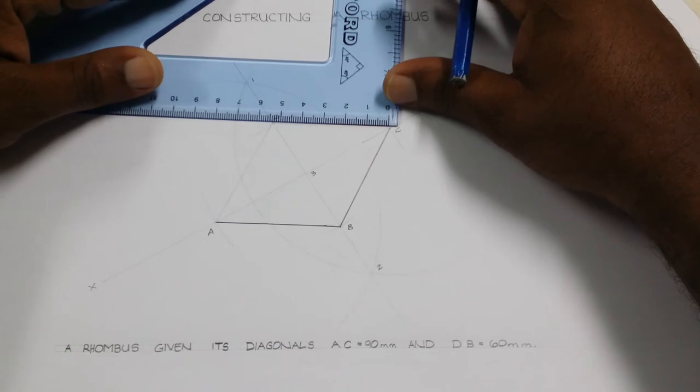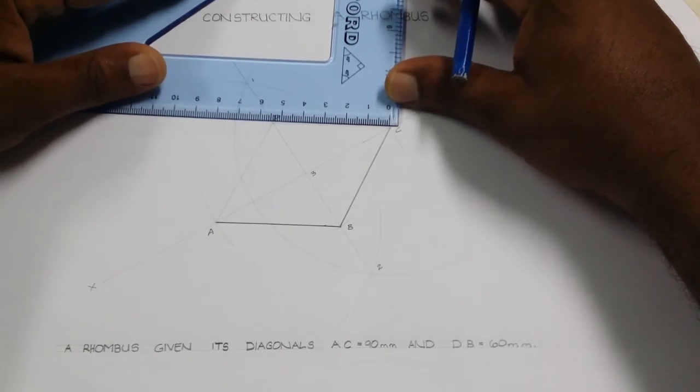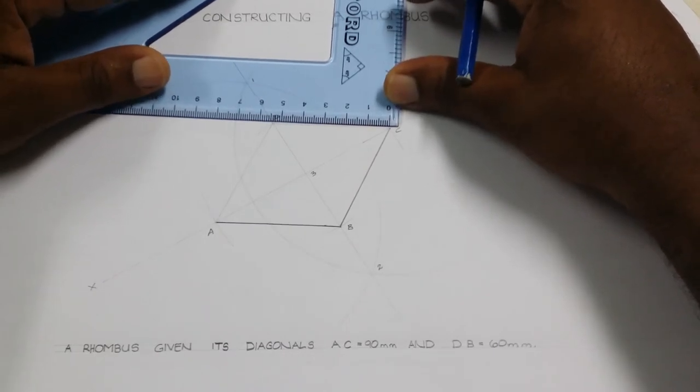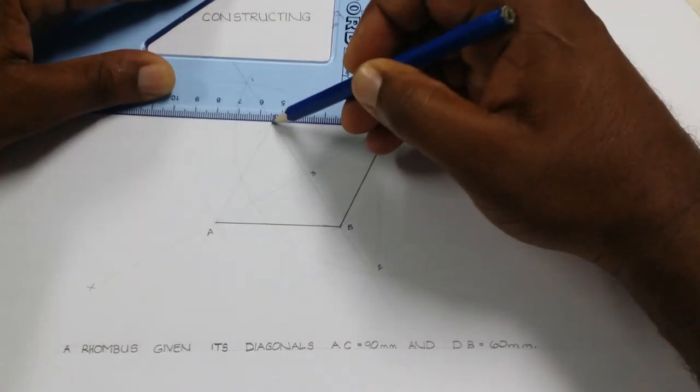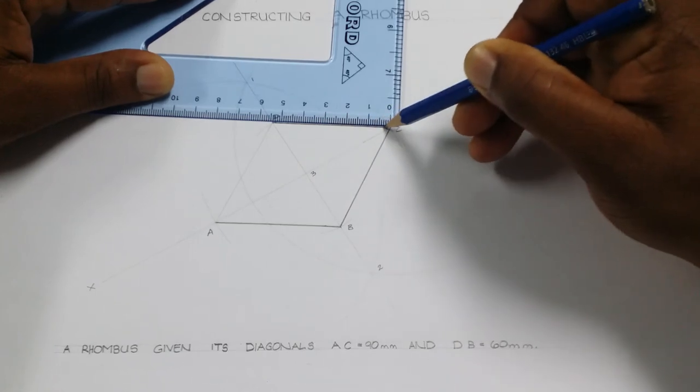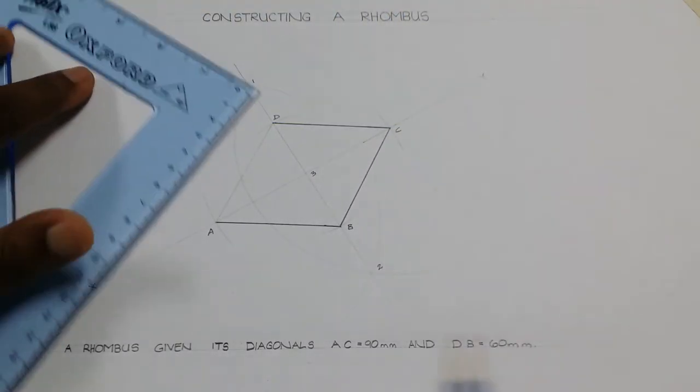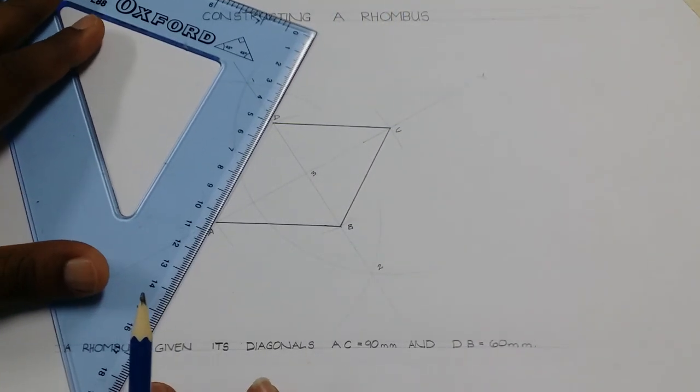We then move to line CD and darken that line. Then we darken our line AD.